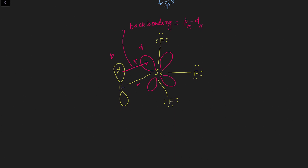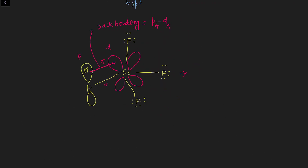The single Si-F bond is sigma in nature, and now with back bonding each Si-F bond has multiple bond character — partial double bond character, shown by a broken line indicating resonance due to delocalization of pi electrons. Because the surrounding fluorine is the donor atom, the hybridization and geometry of the molecule do not change — sp3 remains after back bonding.